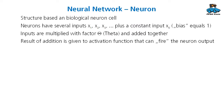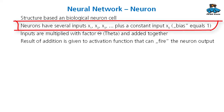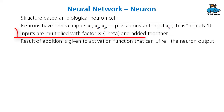Different implementations are possible for a machine learning algorithm. A very popular and successful one at the moment are neural networks. They are based on neurons that resemble the structure of a biological neuron cell. They work by having several inputs — x1 to xn — plus a constant input which is always 1, called the bias. These inputs are multiplied by a certain factor theta and added together.